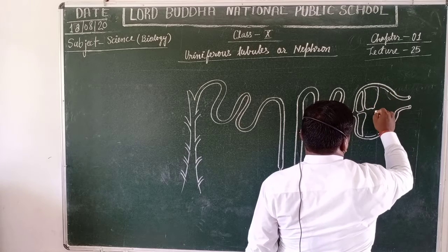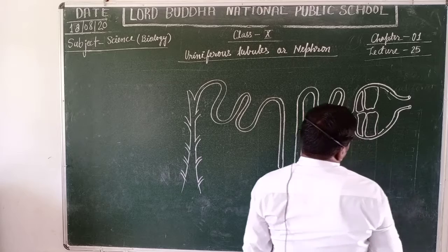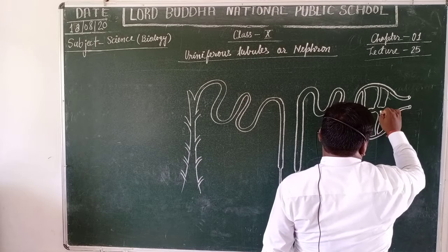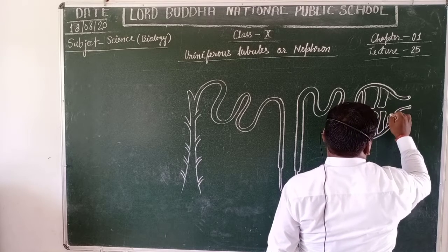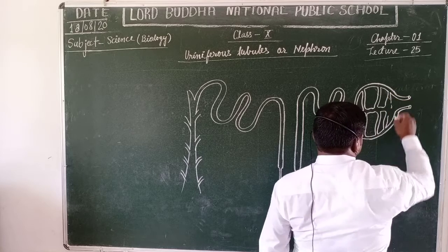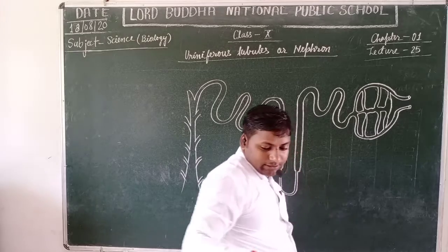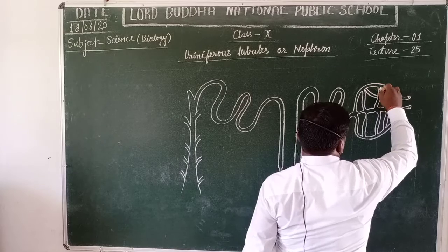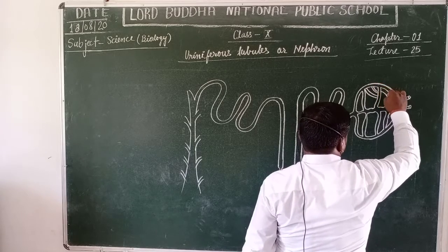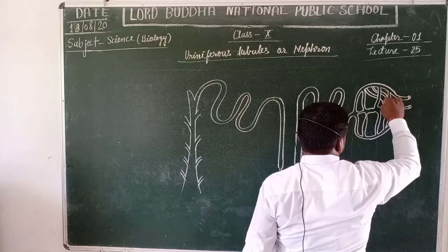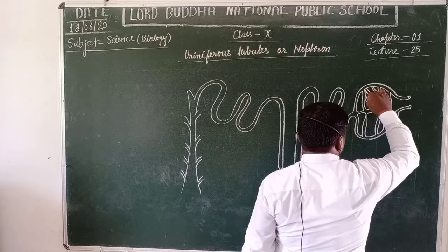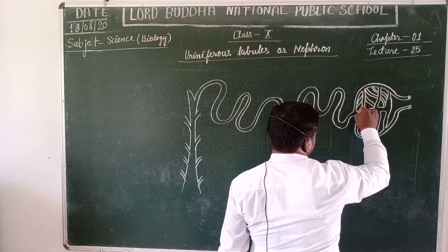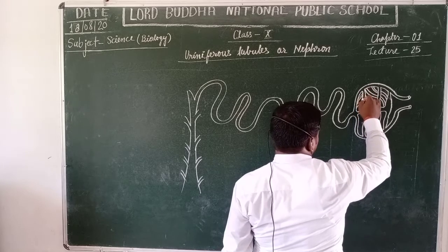This network of capillaries contains the nitrogenous-laden blood, and these capillaries along with the renal artery and renal vein help in the filtration of the nitrogenous-based substances found inside the urine. The important function of these nephron tubules is to perform the process of ultrafiltration, reabsorption, and secretion.